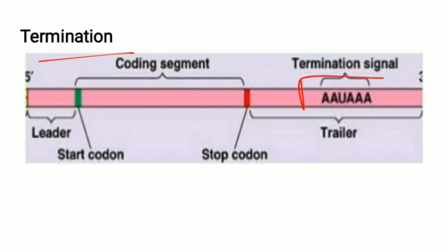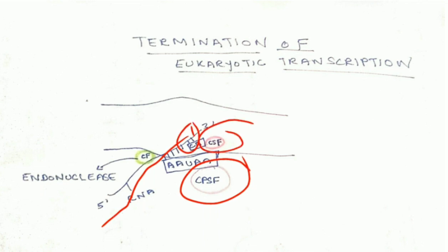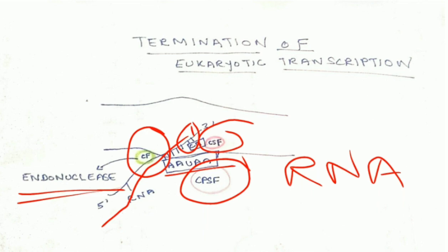For termination in eukaryotes, you have to remember the signal AAUAAA. The cleavage polyadenylation specific factor (CPSF) binds to this AAUAAA signal region, and the cleavage stimulating factor (CSF) binds to the CA region of the RNA. Binding of CPSF and CSF causes the binding of cleavage factor CF, which acts as an endonuclease and removes the RNA.